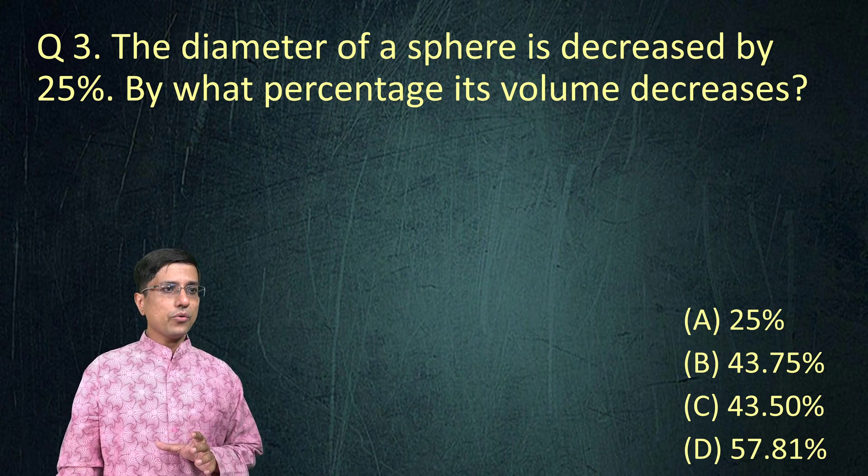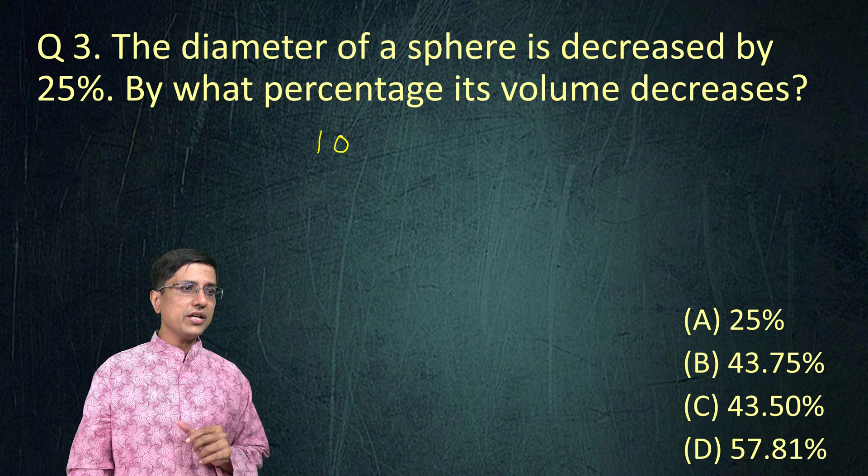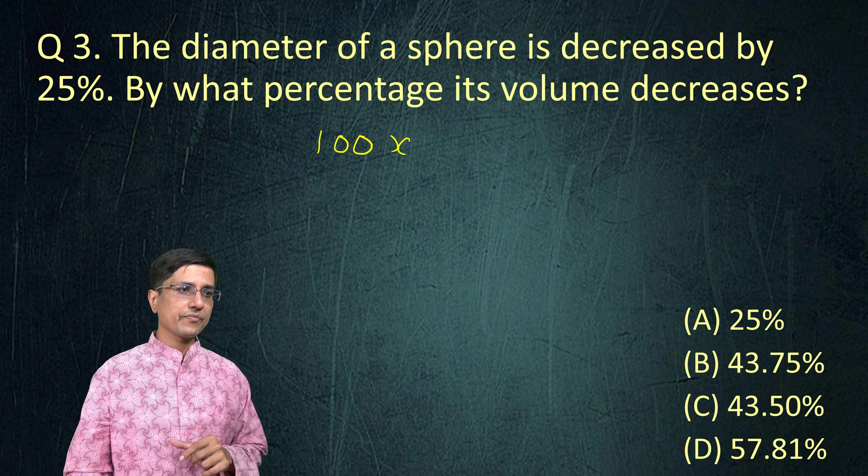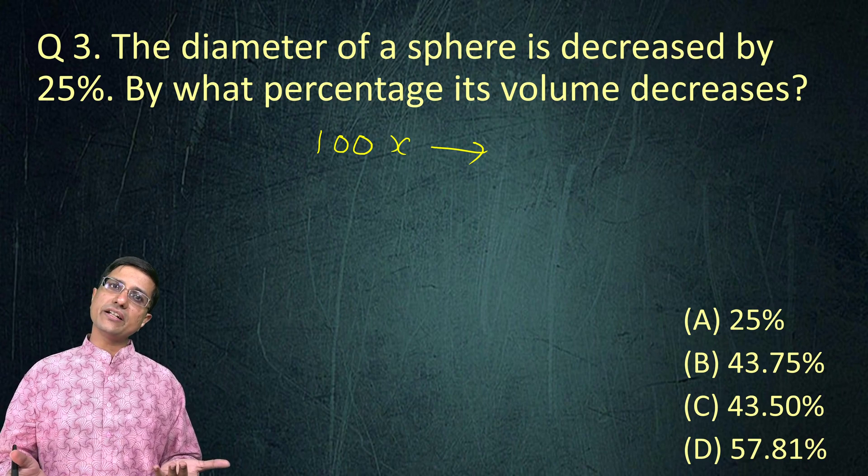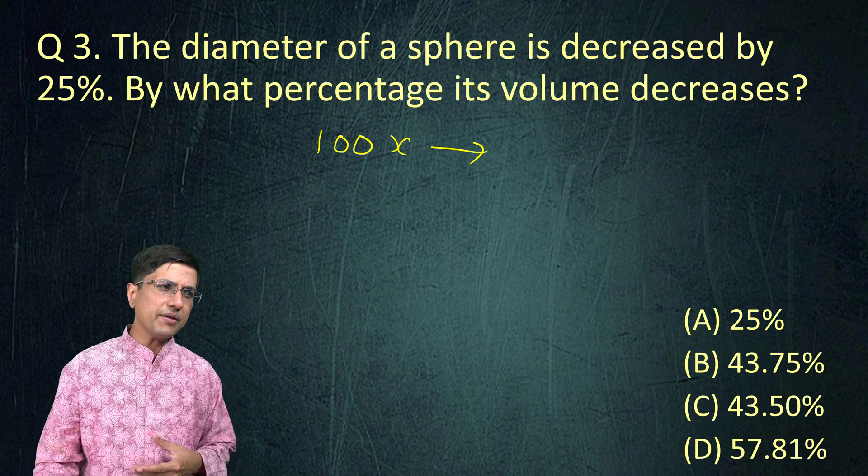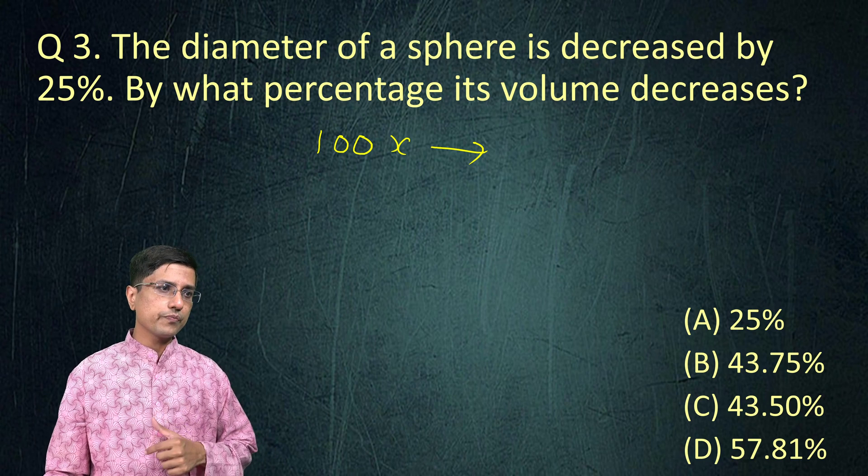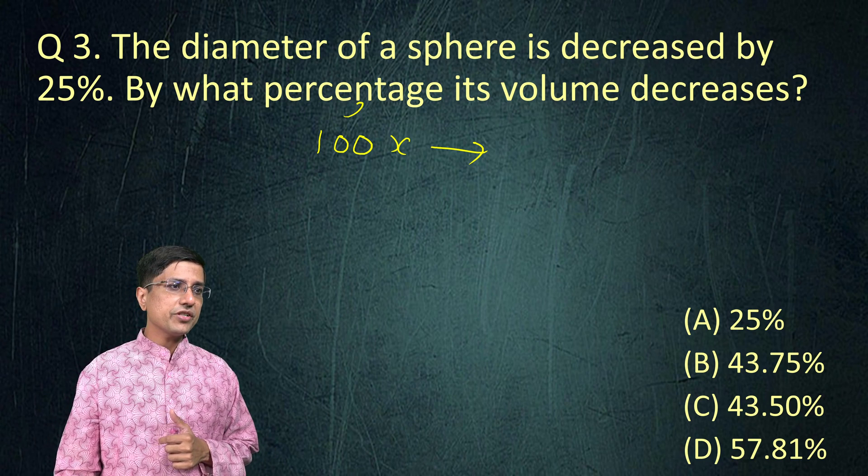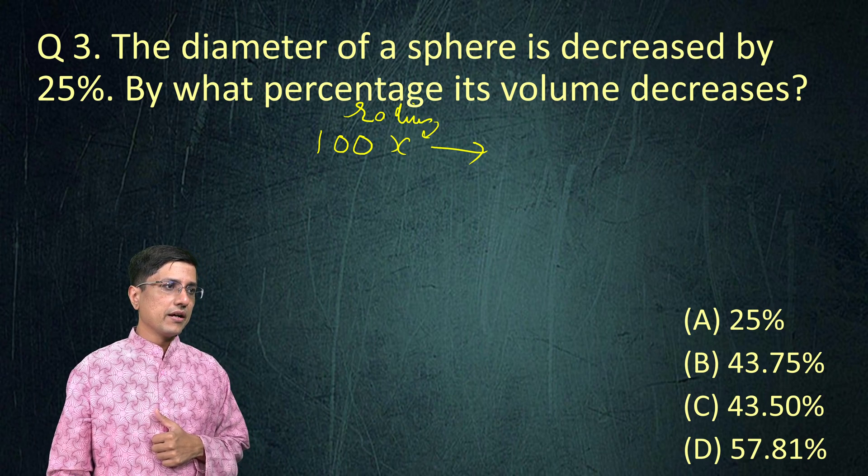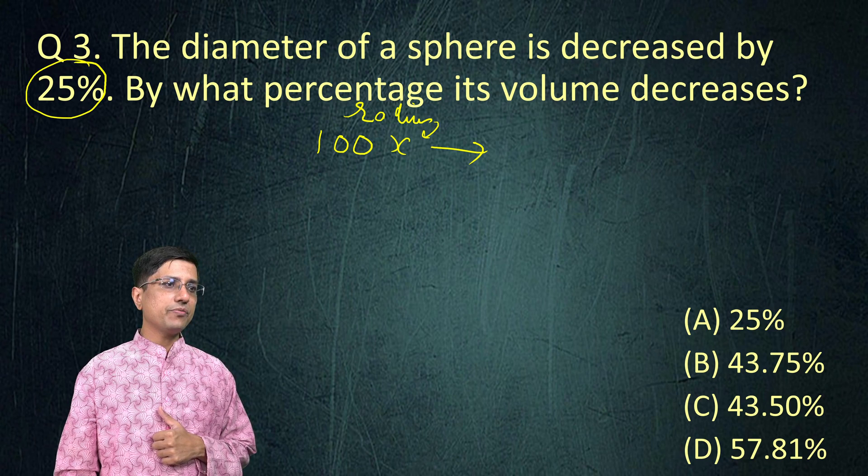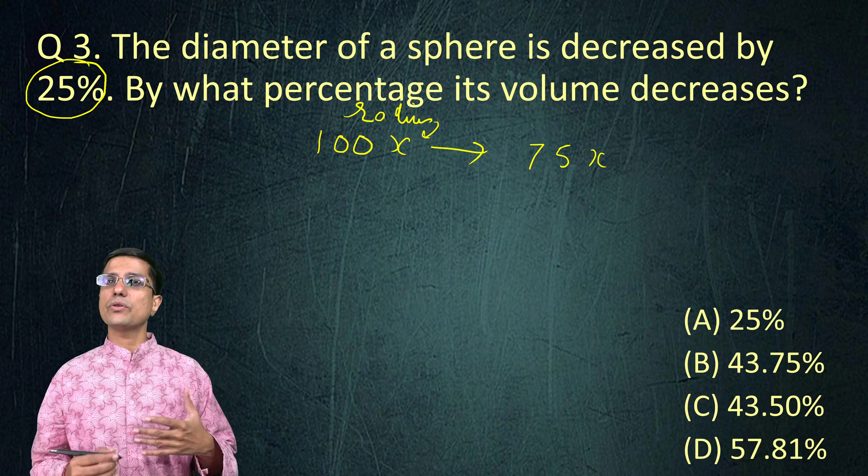Here, we are being told the diameter of a sphere. So let's assume that my original radius of the sphere is 100x. Now, if the diameter is decreased by 25%, it means that the radius would also be decreased by 25%, because they are linearly related to each other. If one decreases by 25%, the other would also. So this is my radius, I am just assuming my radius to be 100x. Once it's decreased by 25, it means that this would be reduced only to 75x.